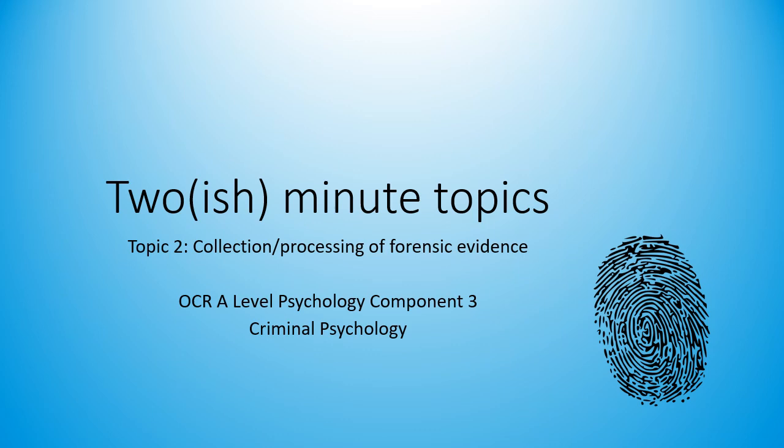Hello and welcome to another video where I summarize a part of the OCR A-level psychology syllabus. This video is about component three, and in particular the topic of collection and processing of forensic evidence in criminal psychology. There are three parts to this topic: part A which is about research and findings, part B which is about issues and debates, and part C which is about applications. This video is going to hopefully do all three of those in about two minutes starting on the next slide.